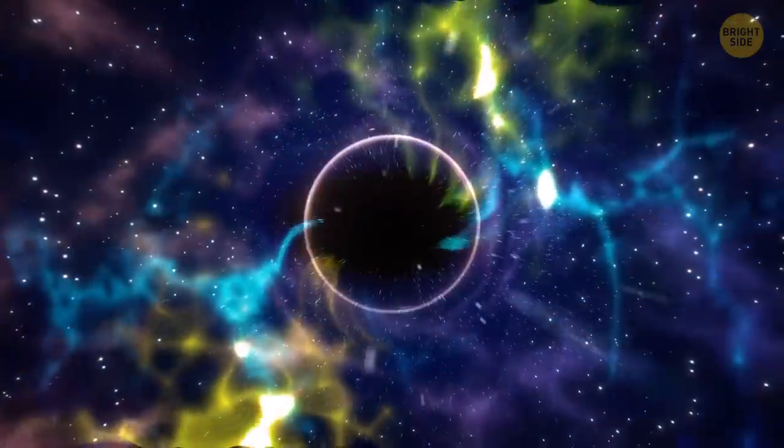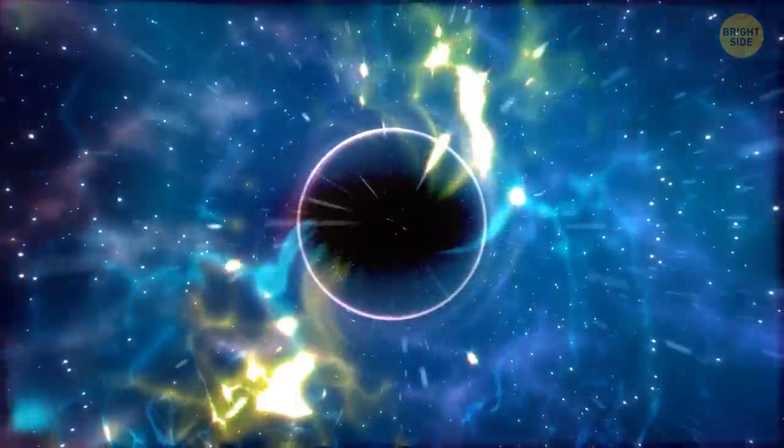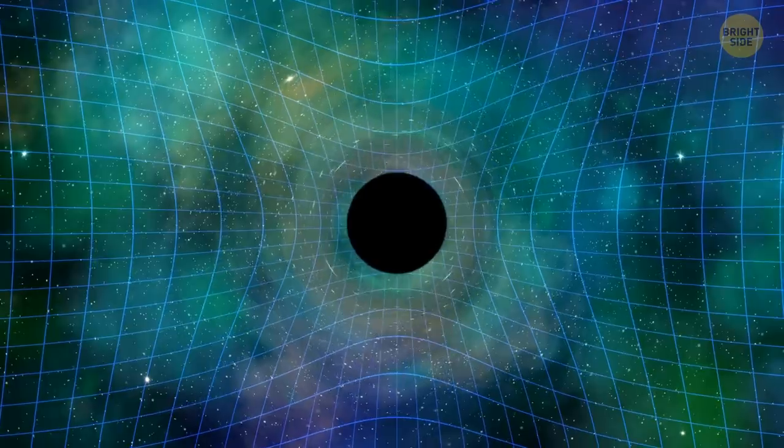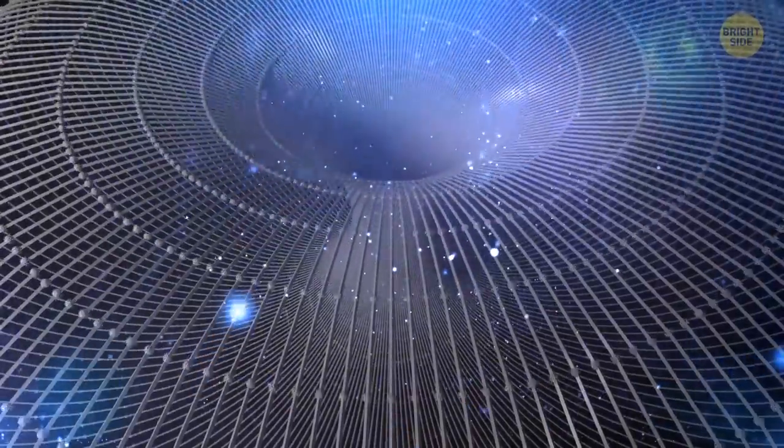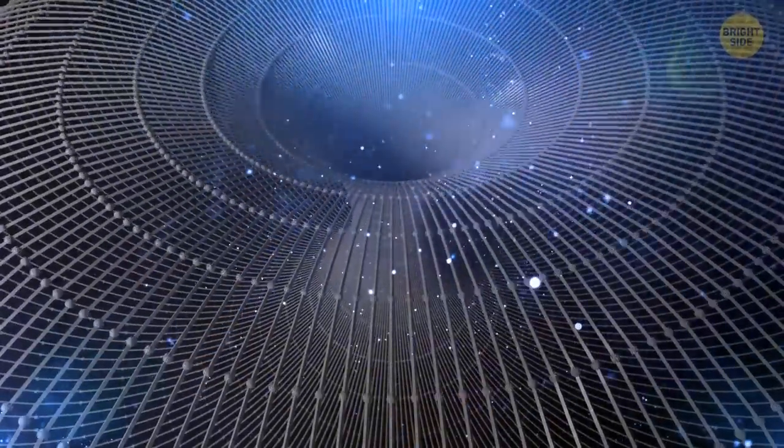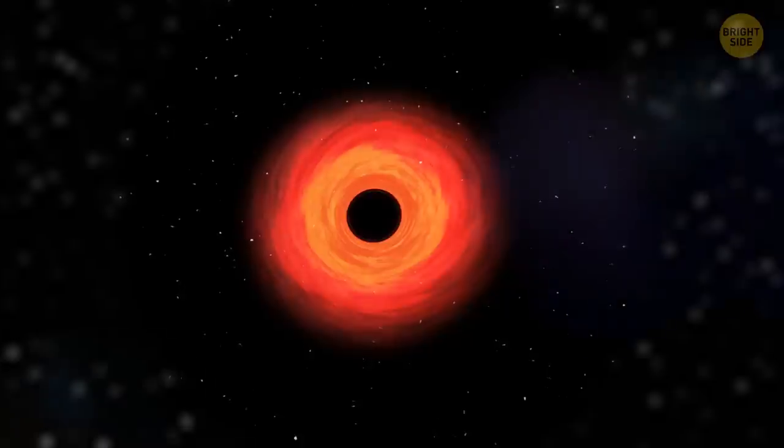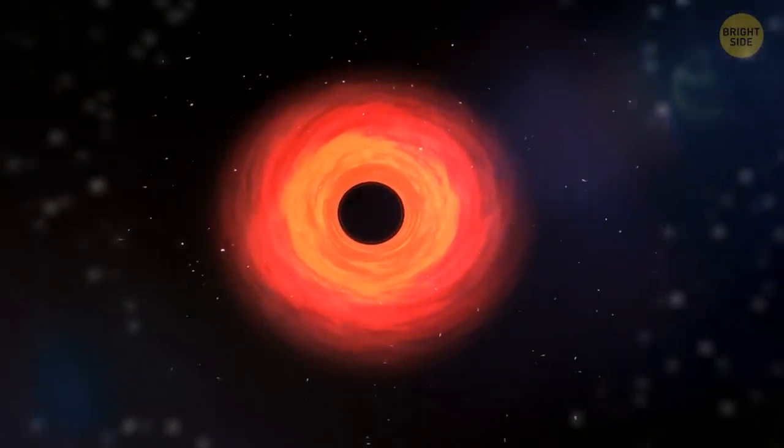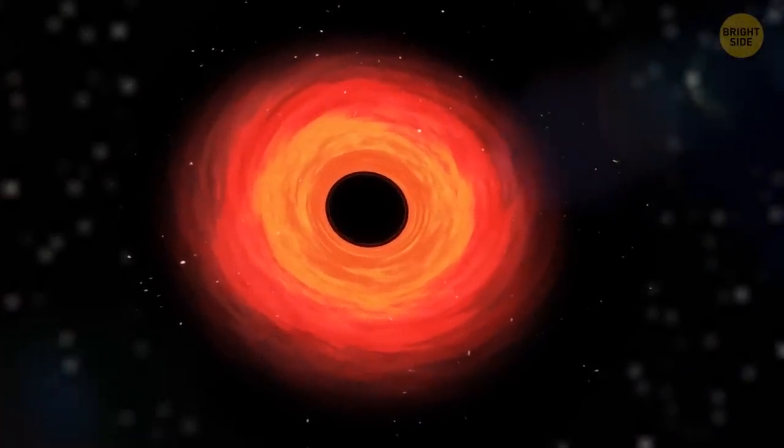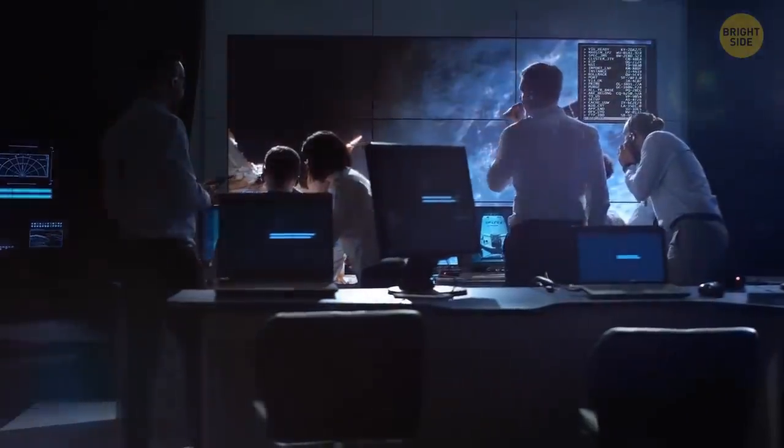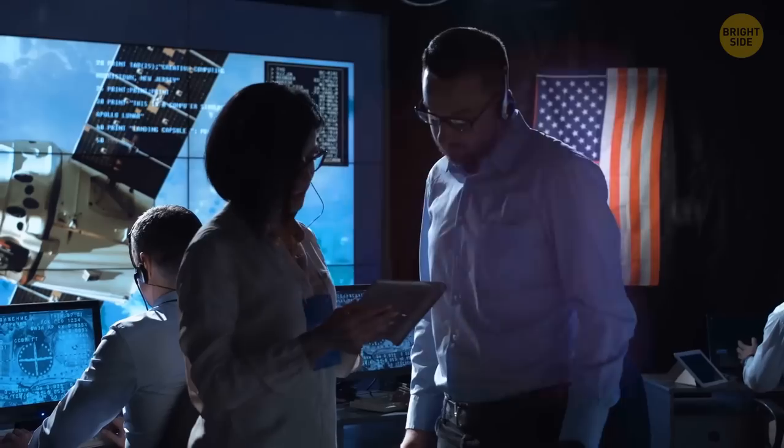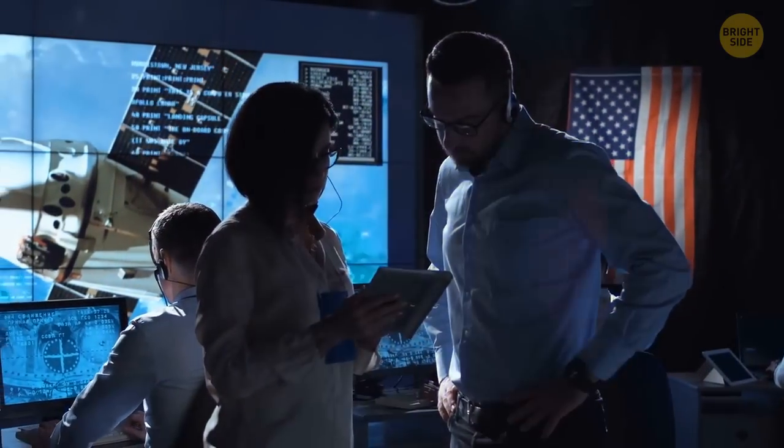At least, we know what black holes look like. Well, kind of. It's actually the shadow of a black hole's event horizon, visible against the glowing, superheated material falling inside the hole. The first-ever mugshot of a black hole appeared in 2019. But the data for its creation was collected in 2017. It took an international team, consisting of more than 200 astronomers, two years to assemble the image.